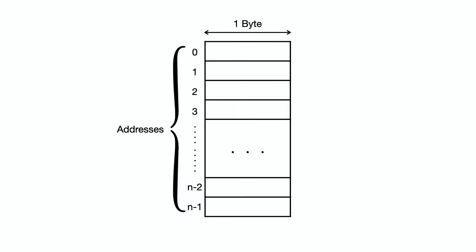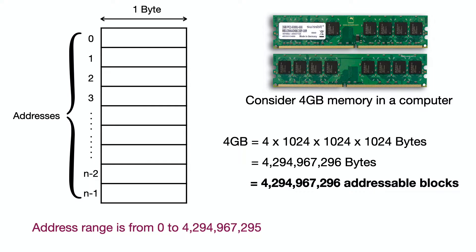Every address in RAM is unique. For example, if we have 4GB of memory, that means 4,294,967,296 bytes of RAM, which means 4,294,967,296 blocks. So the address range is 0 to 4,294,967,295, starting from 0 to n-1.